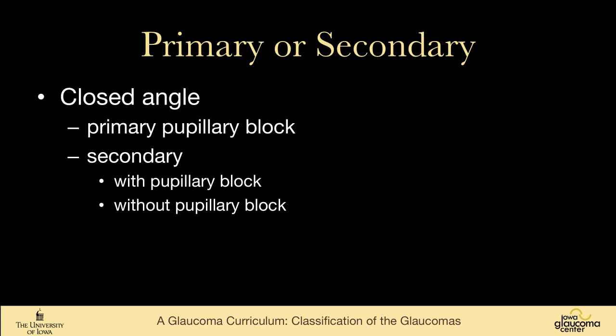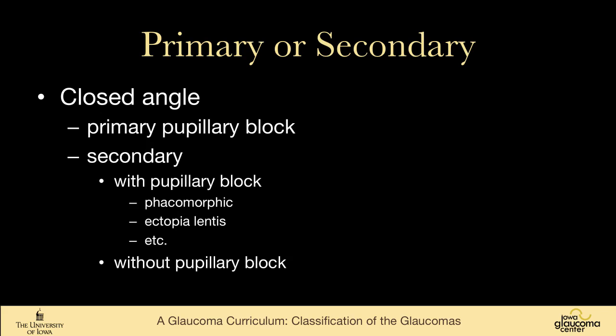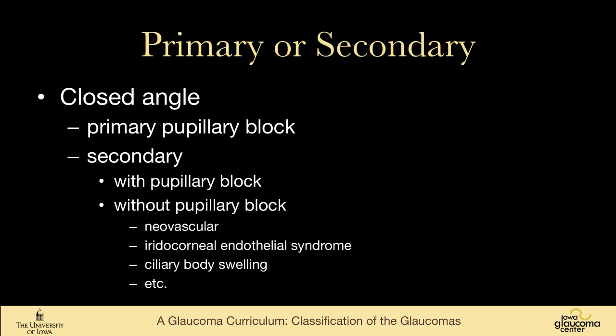For closed angle glaucoma, you can have primary pupillary block angle closure, or secondary glaucomas — either with pupillary block, in which case a laser iridotomy should be beneficial (things like phacomorphic or ectopia lentis), or without pupillary block, where laser iridotomy would not be helpful — things like neovascular, ICE syndrome, ciliary body swelling, etc.